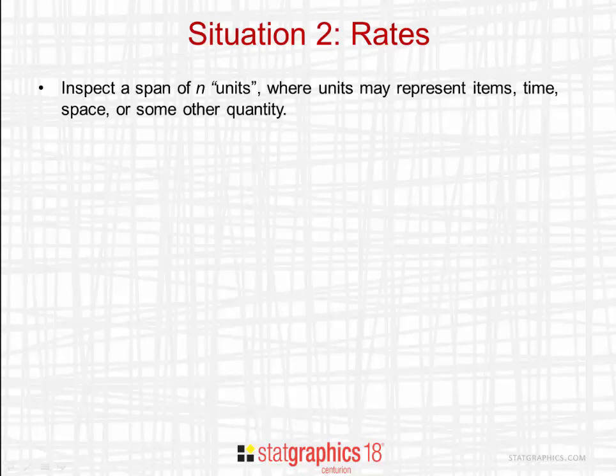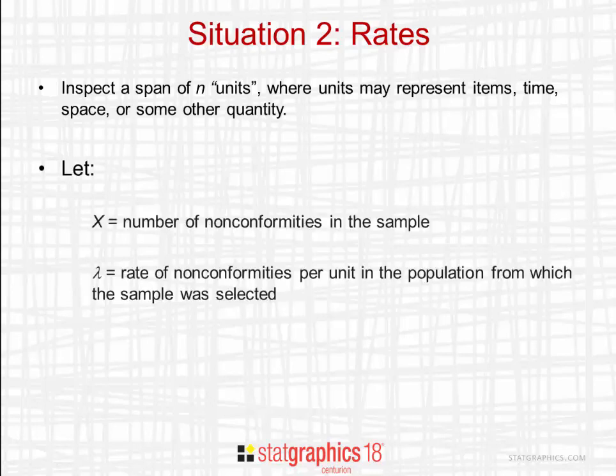The second situation I want to talk about is the estimation of the rate of non-conformities. Let's suppose that we inspect a span of n units, where units may represent items, time, space, or some other quantity. I'm going to let X equal the number of non-conformities in the sample. Unlike the previous situation, a single unit could have more than one non-conformity. I'll also let lambda equal the rate of non-conformities per unit in the population from which the sample was taken.